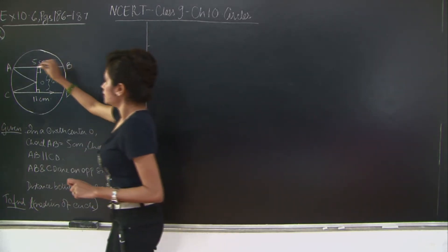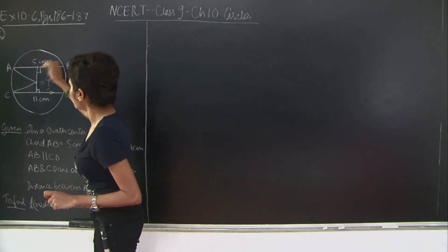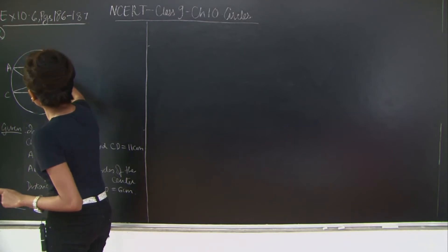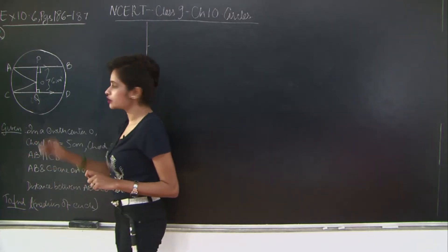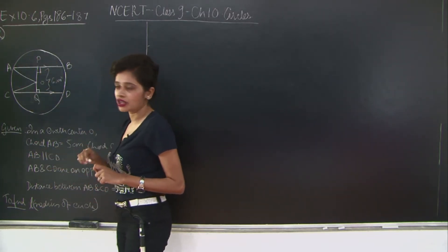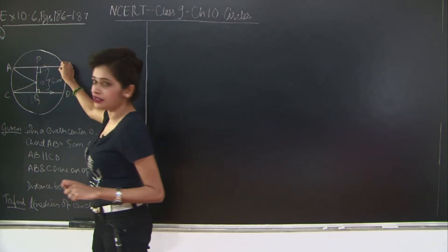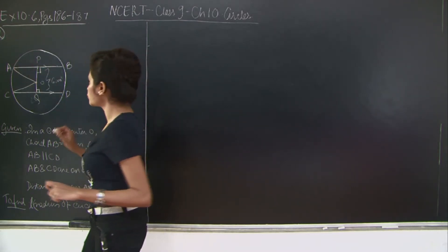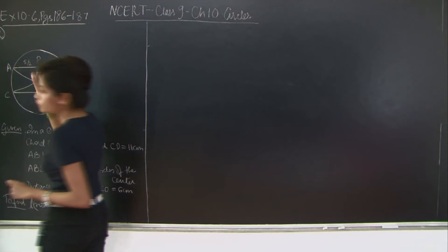AB is 5cm and we have drawn the perpendicular. I'll label the feet of the perpendiculars as P and Q. So OP is perpendicular to AB and OQ is perpendicular to CD. OP is perpendicular from the centre to chord AB, so it bisects the chord. Therefore AP is 5/2 cm.